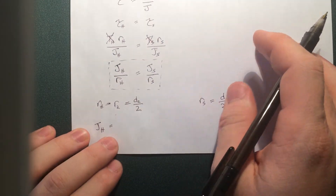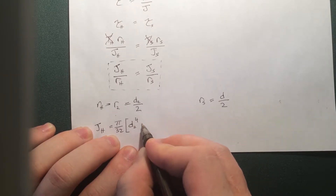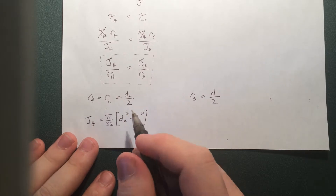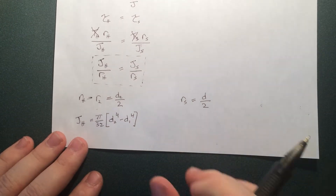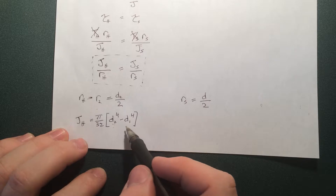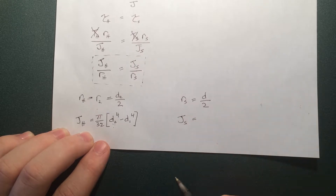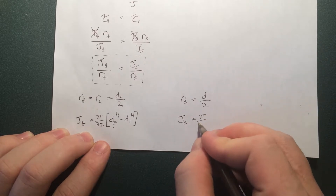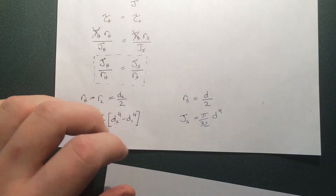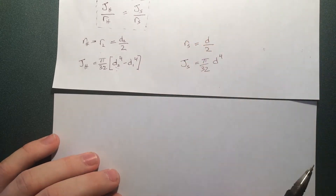The polar moment of inertia for the hollow bar is J_H = (π/32)(D2⁴ − D1⁴). This comes from the standard formula π/2 · r⁴ — substituting diameter/2 and factoring out the 2⁴. And J for the solid is simply J_S = (π/32) · D⁴. These are the components we need to solve the equation.